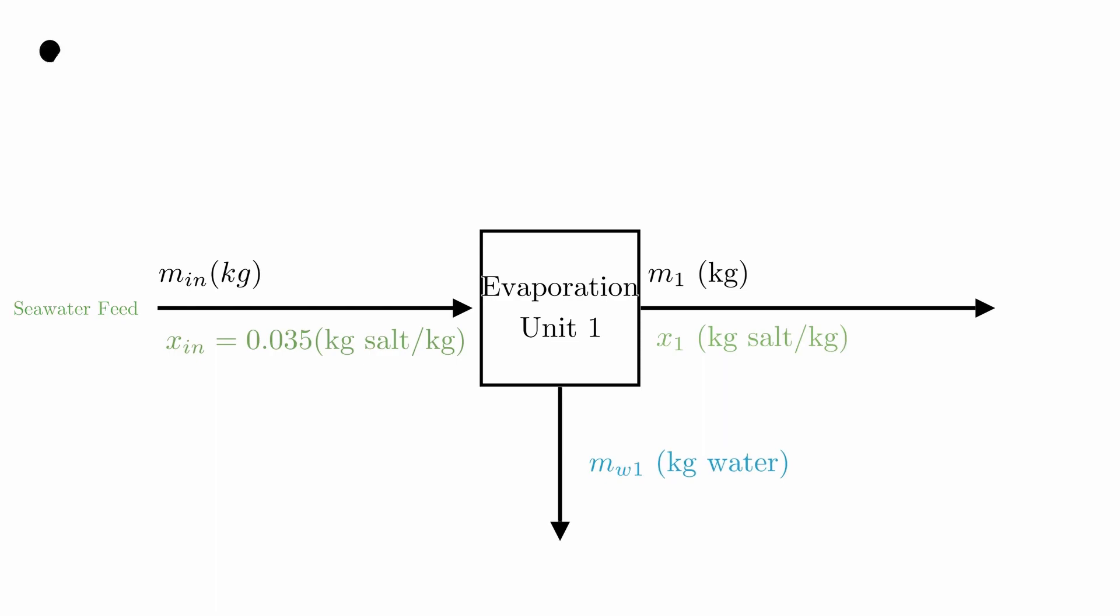Now, we can write the overall mass balance equation. When in doubt, N equals out. So we add up all the streams entering and leaving the system.